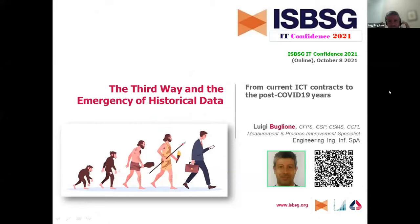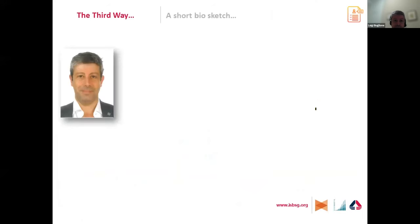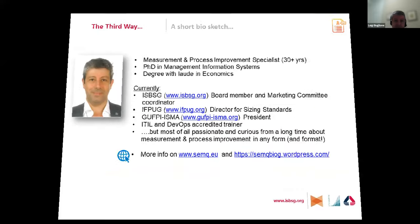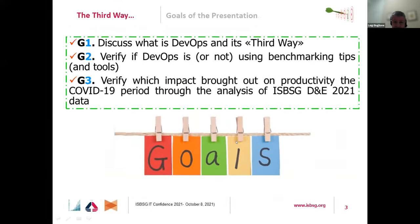Good morning everyone, welcome to this second presentation for the IT Conference 2021. Today my speech is about the stress about the need for historical data for benchmarking. We need absolutely to take into account real data because we are passing through this period hoping it will close in the shortest way possible. The goals for this presentation are three mostly: to discuss how to stimulate data gathering in our organizations and to use DevOps — a very good approach to shorten production times.